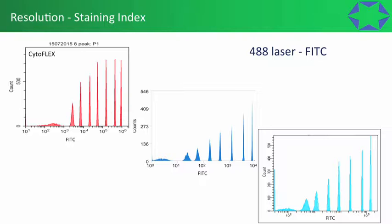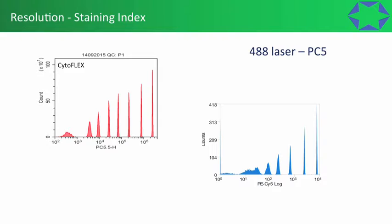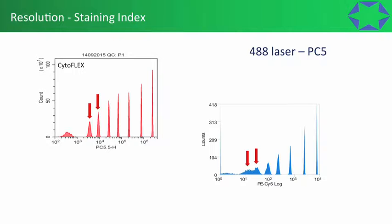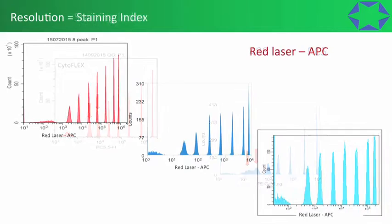So why is resolution and staining index important? We want to see more detail in our data. We get out our eight-peak beads as a first point — that's what we did here. Looking at the CytoFLEX and two other cytometers with the 488 laser in the PE-Cy5 channel, the CytoFLEX has a clear advantage: peaks 2 and 3 are certainly not resolved as well on the other flow cytometer, whereas they are with the CytoFLEX.